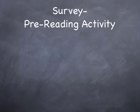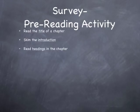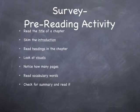The steps to surveying are: read the title of a chapter, skim the introduction, read headings in the chapter, look at visuals, notice how many pages, read vocabulary words, check for a summary and read it, and notice unique things about the chapter.